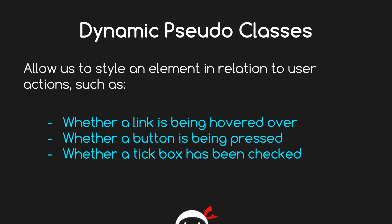Looking at dynamic pseudo classes more deeply: they allow us to style an element in relation to user actions. That could be things like when you hover over a link — does it change color or underline? Or when a button is being pressed, when you click that submit button, what happens to it? Do you give it an emboss effect, move it slightly, or change the color?